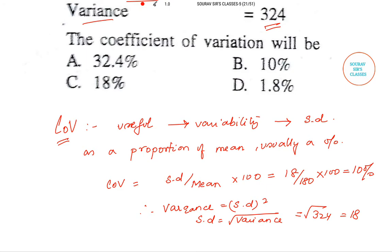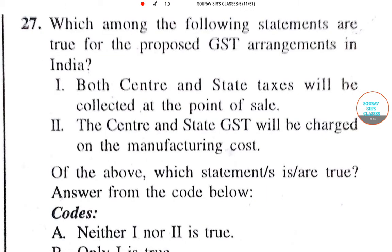Moving on to the next question. This question is a theoretical question related to something that has happened in our country very recently. It says which among the following statements are true for the proposed GST arrangement in India. It says both center and state taxes will be collected at the point of sale, and the other statement says center and state GST will be charged on the manufacturing cost.